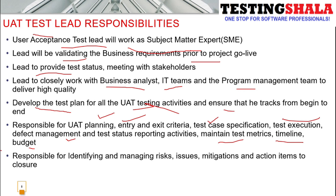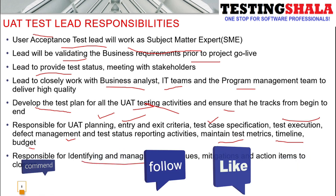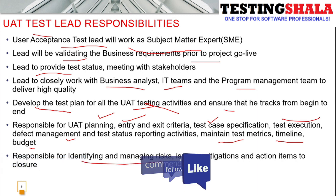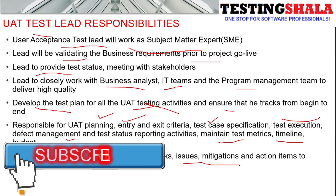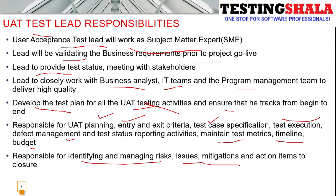The next responsibility of a UAT test lead involves identifying and managing risk. You will be required to find out issues and come up with mitigation plans and action items to close those risks and issues. This is very crucial — if you are not able to assess risk well in advance or find solutions by working with stakeholders, your project could be headed for disaster. The test lead must visualize issues in advance, put in proper mitigation plans, and track everything through to closure.